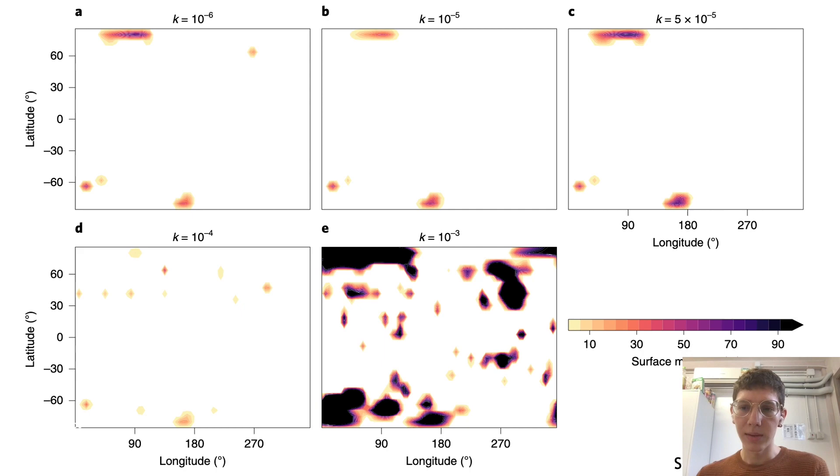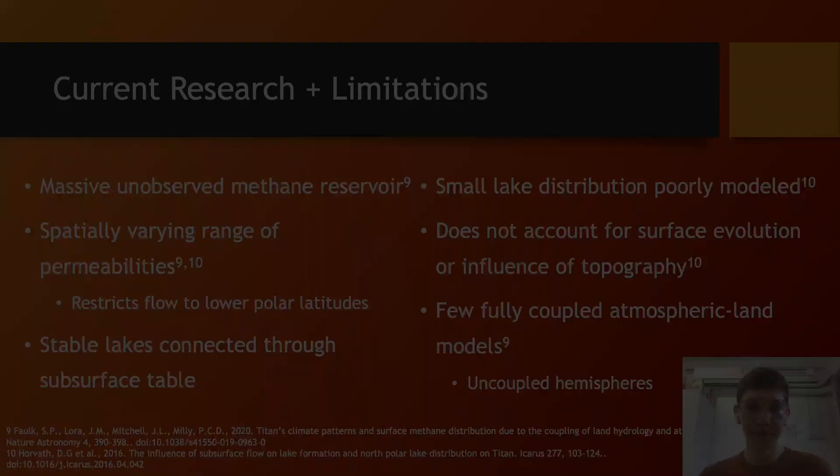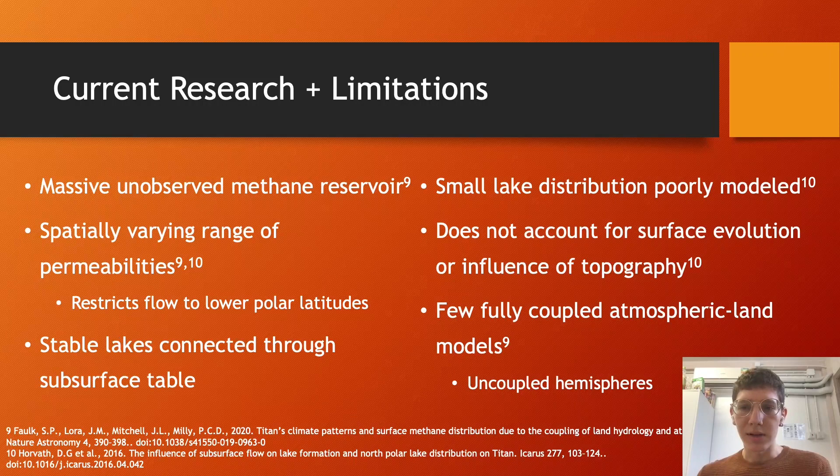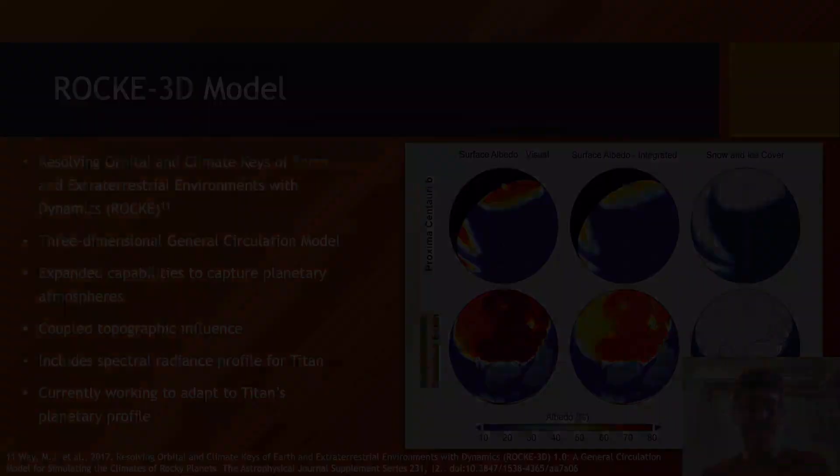Soil types are currently poorly constrained and flow is modeled using methane as a primary constituent. So results suggest a subsurface methane reservoir more massive than the observed seas interacting with the atmosphere and participating in the methane cycle. Model results imply an unobserved methane reservoir participates in Titan's methane cycle, best modeled with hydraulic conductivity of 5 times 10 to the negative 5th. Although this still does not explain the distribution of small lakes, which may be due to the influence of topography or regional surface variation on the atmosphere.